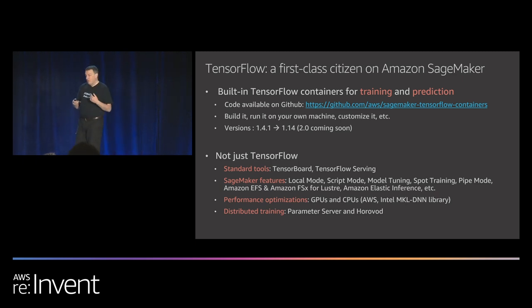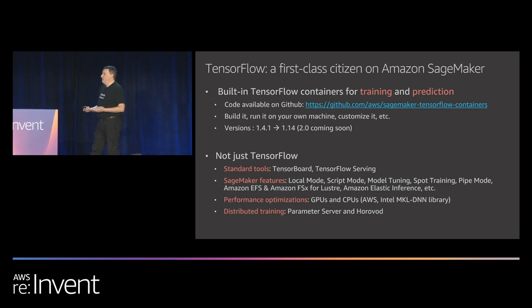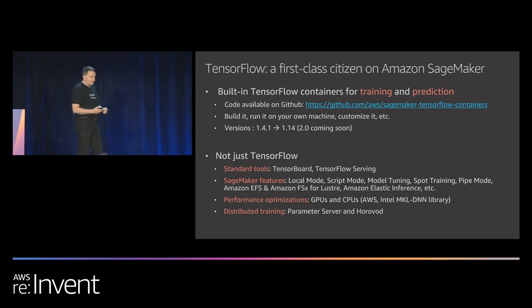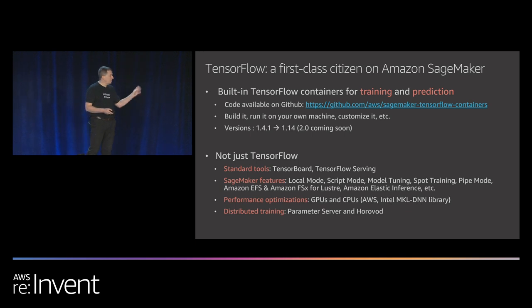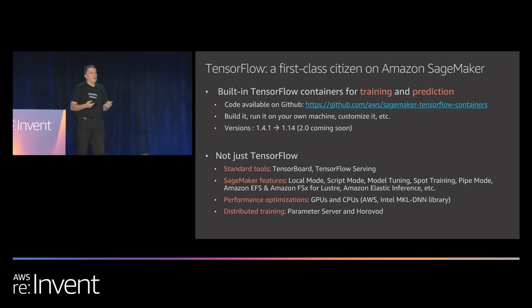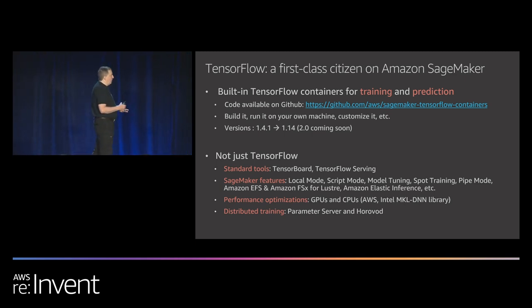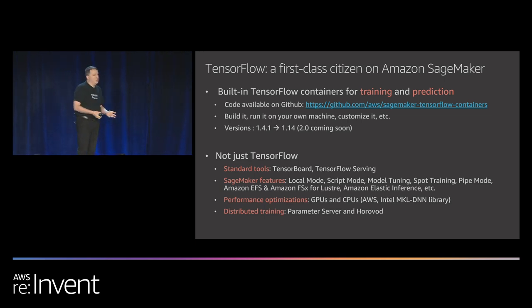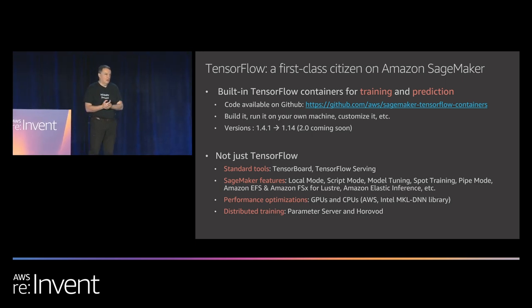We have a dedicated team doing nothing but optimizing TensorFlow on AWS to give you the best training and prediction performance on any platform. We're also working with Intel on specific optimizations. And of course, distributed training is available out of the box using either the parameter server mode — the default in TensorFlow — or Horovod, that great open source project that lets you scale distributed training massively. We're heavily contributing to that project.